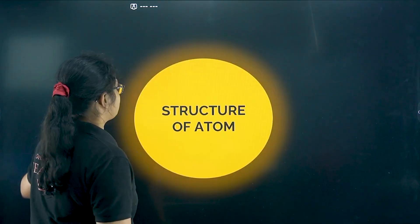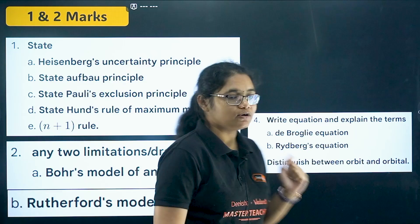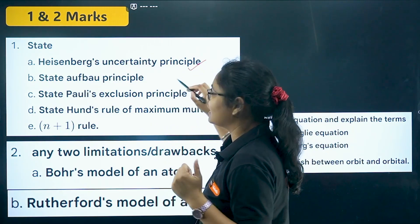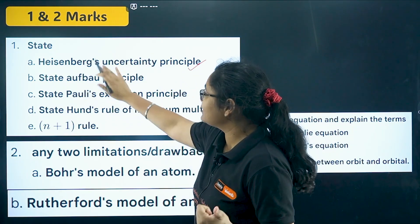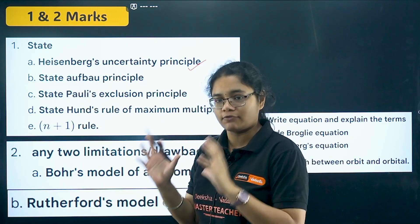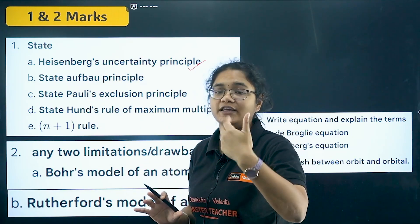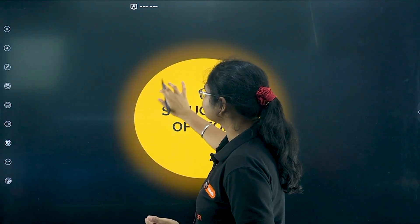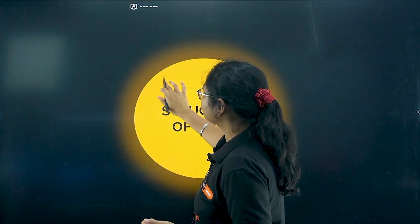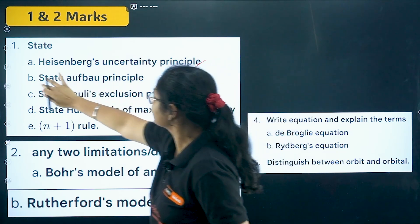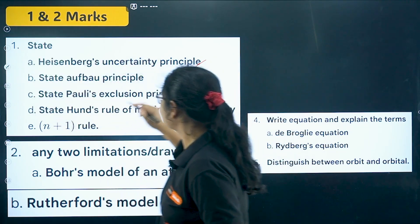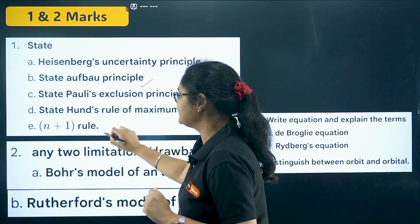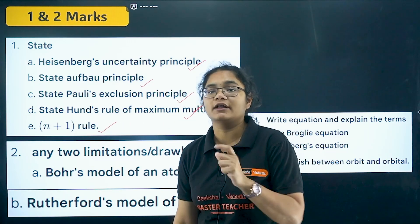Moving to the next chapter: Structure of Atoms. Here also there are certain laws you should first focus on. The first thing is the Heisenberg uncertainty principle — whenever you prepare any law, you should also know the formula and the meaning of each term in that formula. Next you have Aufbau principle, Pauli's exclusion principle, Hund's rule of maximum multiplicity, and the n plus l rule.